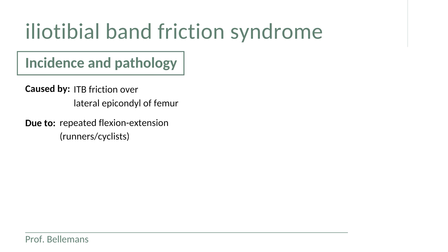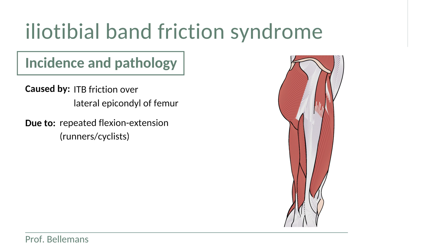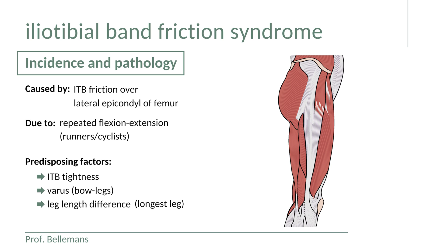Compare it with the string of a guitar: if the guitar string is really tight, it creates a lot of rubbing over the lateral edge of the knee, whereas when the string is loose, you get much less of a tendency for a friction effect. This means that any factor which contributes to tightening of the ITB will lead to an increased risk for ITB friction syndrome.